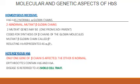This codes for the synthesis of the beta chains of the globin molecules. The mutant beta globin chain is represented as beta S. The resulting structure of hemoglobin is represented as alpha 2 and beta S 2. In the homozygous type, it has two normal alpha chains — that is why it is represented as alpha 2 — but the beta chain has a mutant gene.